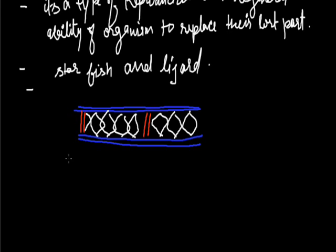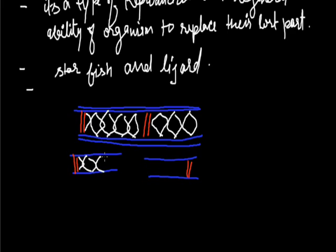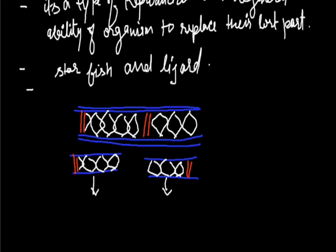Spirogyra breaks down into two parts, and each part of Spirogyra develops into a new organism through the process of Fragmentation. Each piece or cell of Spirogyra develops into a new organism.